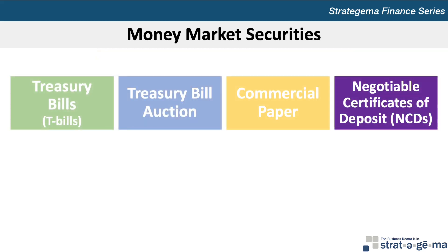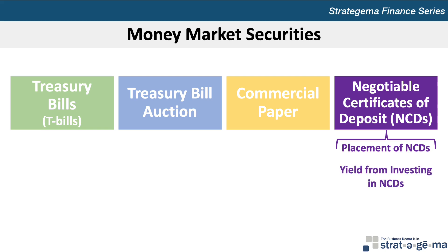Negotiable Certificates of Deposit, or NCDs, are certificates issued by large commercial banks and other depository institutions as a short-term source of funds. Some issuers place their NCDs directly; others use a third-party institution or sell NCDs to securities dealers, which in turn resell them. NCDs provide a return in the form of interest along with the difference between the redemption or secondary market price and the purchase price. If investors purchase the NCD and hold it until maturity, their annualized yield is the interest rate. However, the annualized yield can differ from the interest rate for investors who buy or sell in the secondary market.